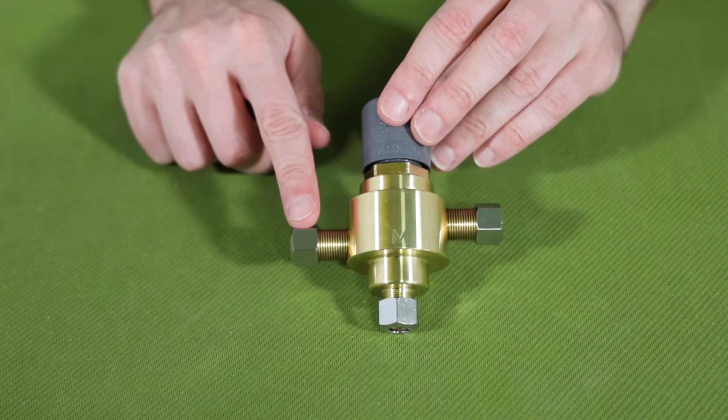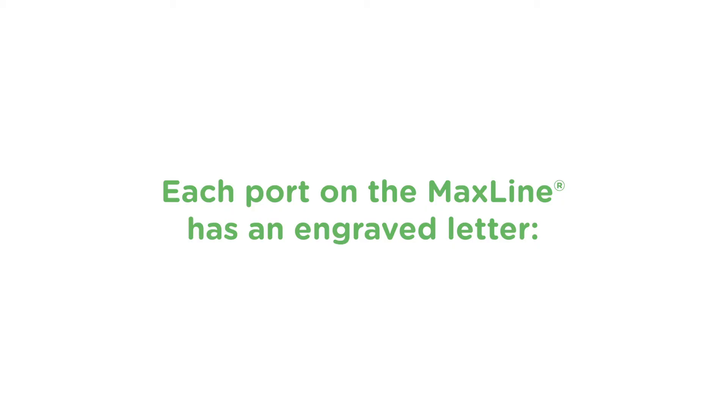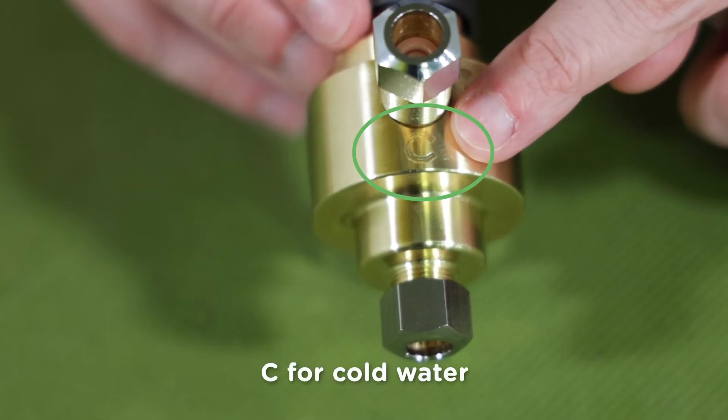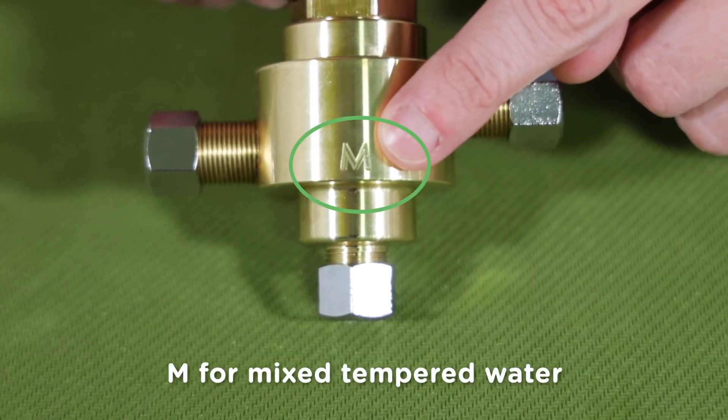The three water connections on the MaxLine are cold water inlet, hot water inlet, and tempered or mixed water outlet. Each port on the MaxLine has an engraved letter: C for cold water, H for hot water, and M for mixed tempered water.